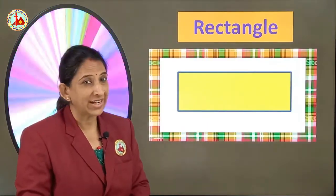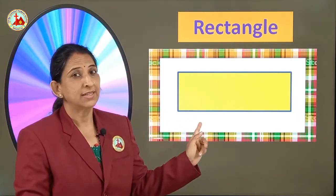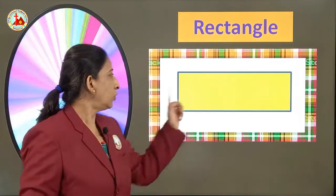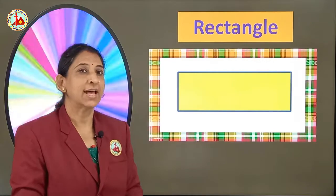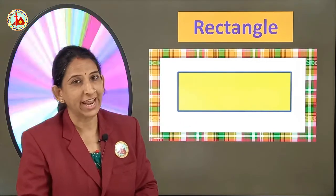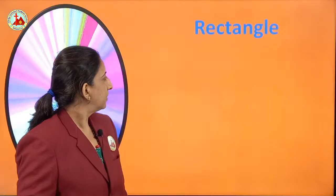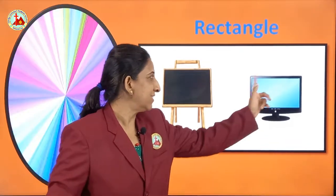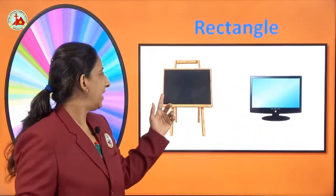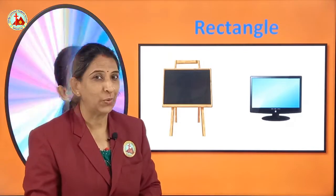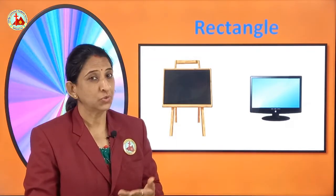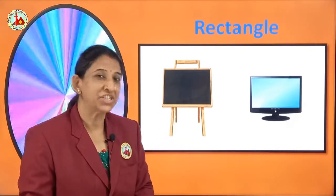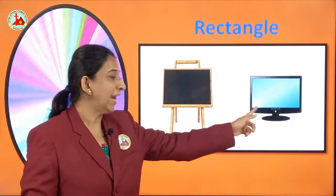This is rectangle. Like square, it also has 4 sides, but 2 sides are small and 2 sides are bigger, so it forms a rectangle shape. Have you ever seen a computer at your home? This is a rectangle shape. And this is a blackboard — when you come to school, you will see the blackboard, and that is rectangle shape.